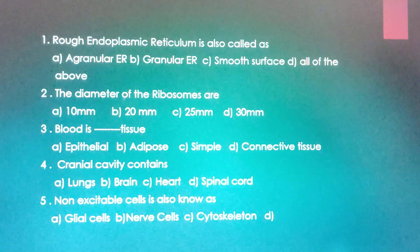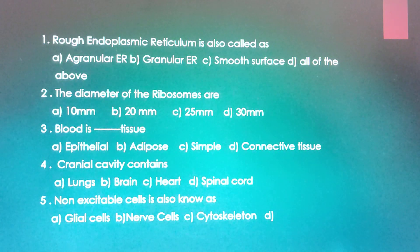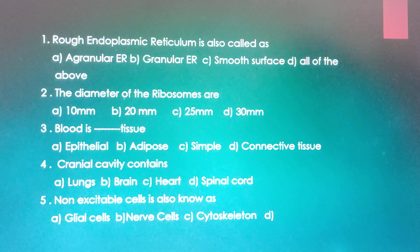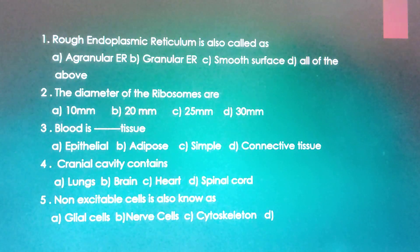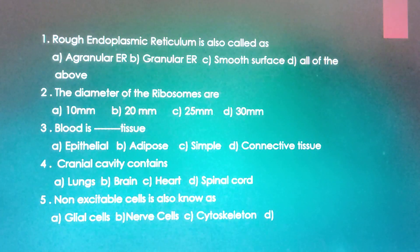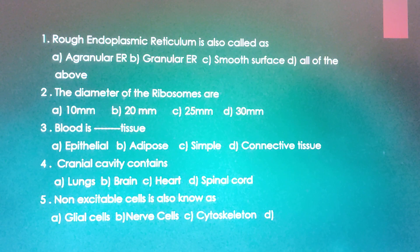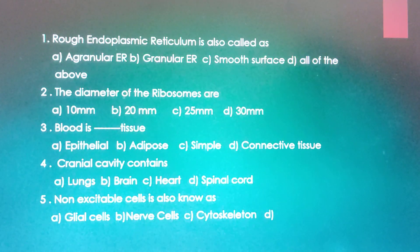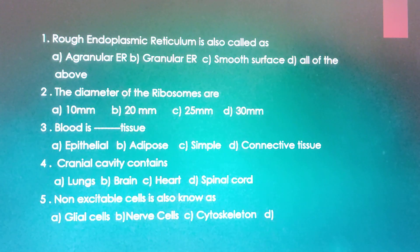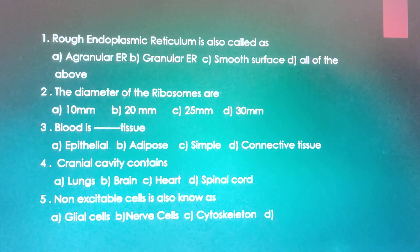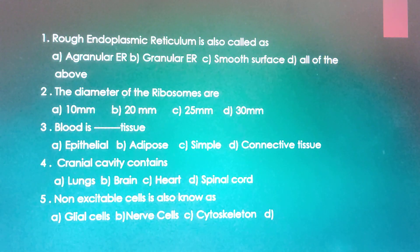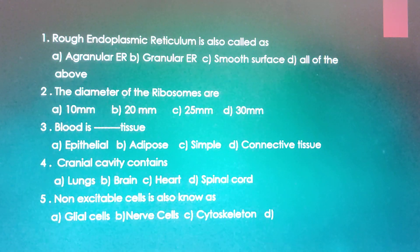Rough endoplasmic reticulum is also called as: agranular endoplasmic reticulum, granular endoplasmic reticulum, smooth surface, or all of the above. The correct answer is granular endoplasmic reticulum. Because for the rough endoplasmic reticulum, there is a presence of ribosomes — that's why it is rough.